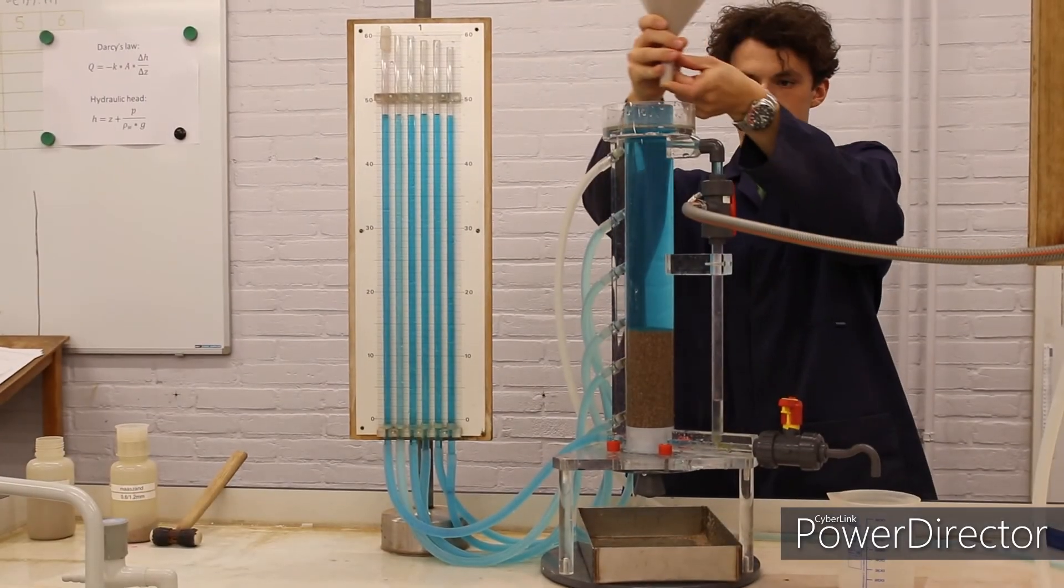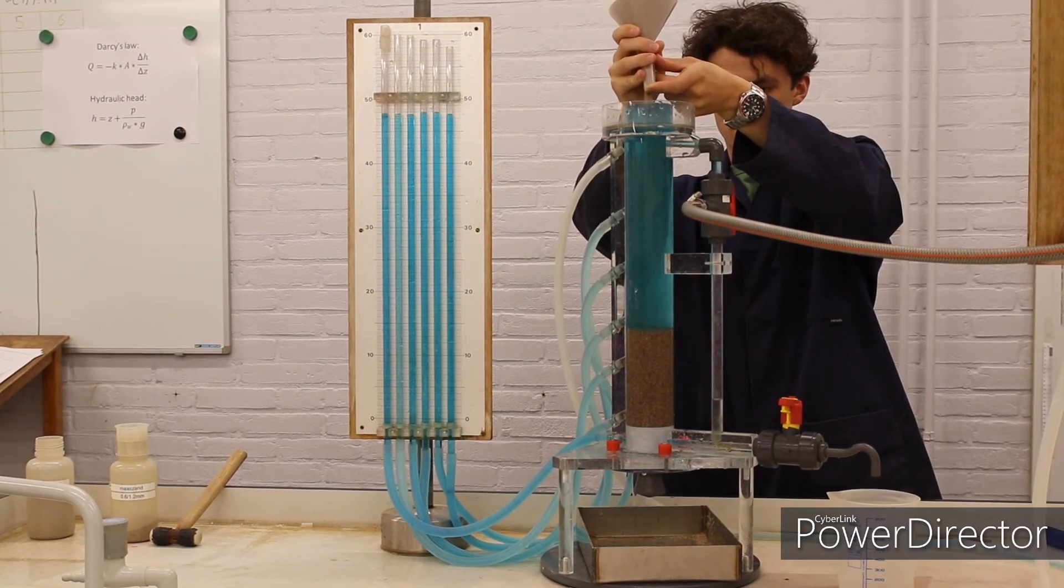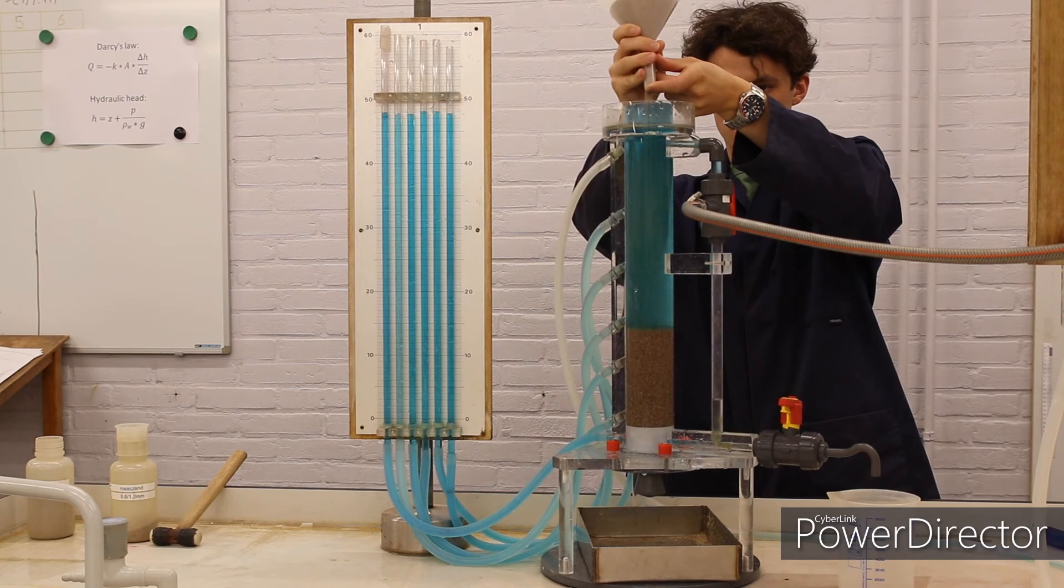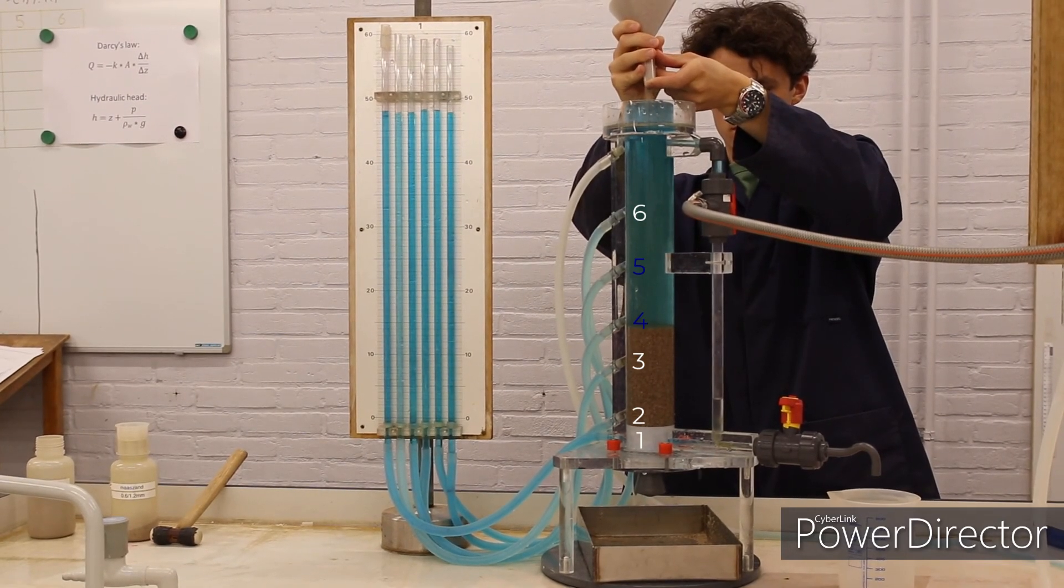Repeat the process now using the fine-grained sand. Prevent mixing of coarse and finer sand by very carefully releasing the first 2 cm of the finer sand. Fill the column up to a point 1 cm below the 6th connection point. Make sure that points 4 and 5 are within the fine sand column.